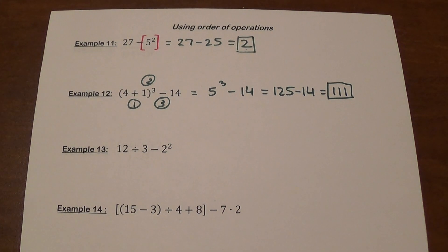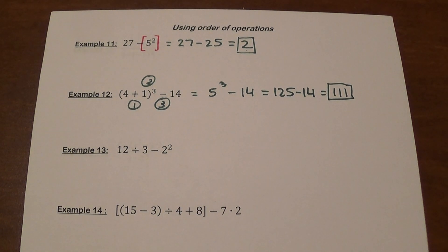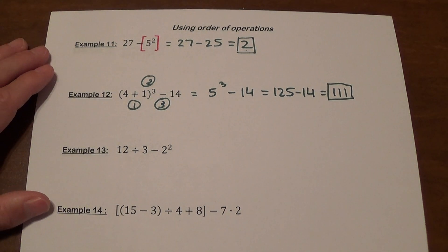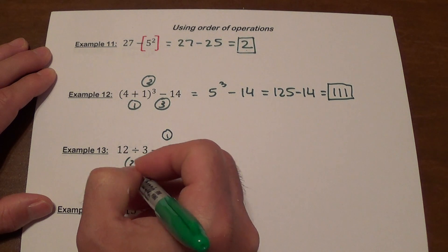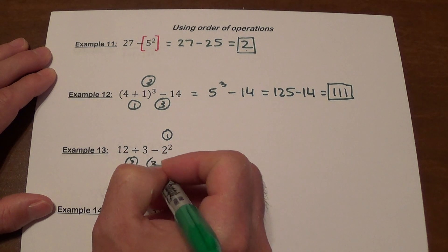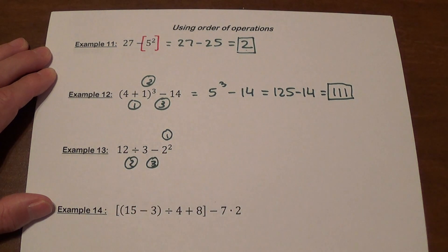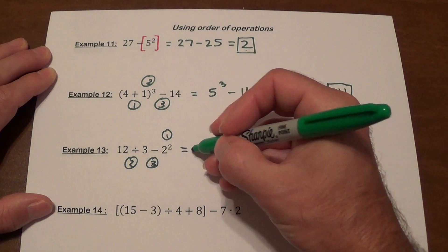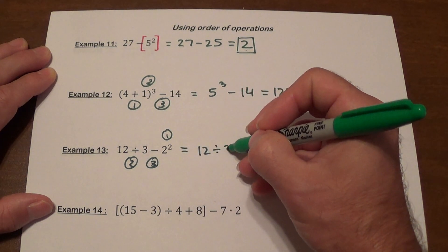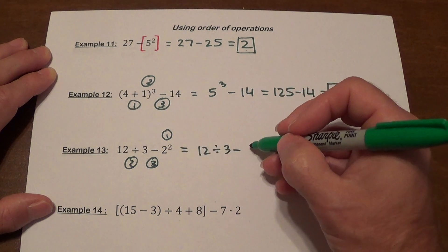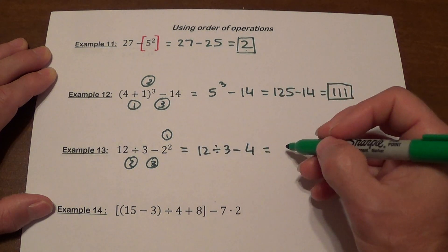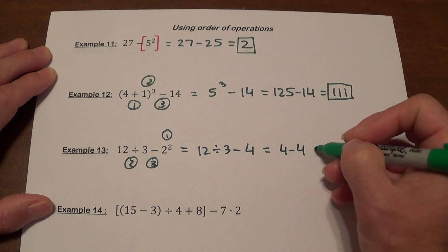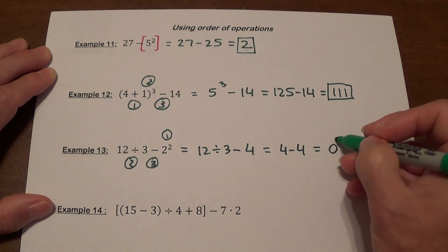Example 13: 12 divided by 3 minus 2 squared. The exponent is done first: 2 squared is 4. Then division: 12 divided by 3 is 4. Finally, 4 minus 4 gives us 0.